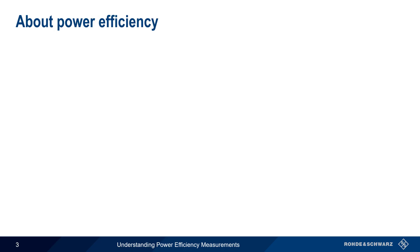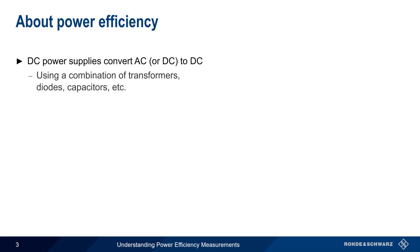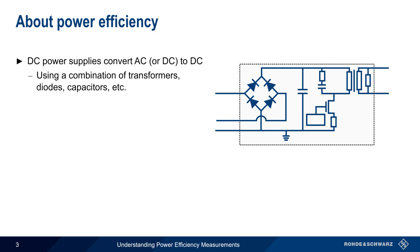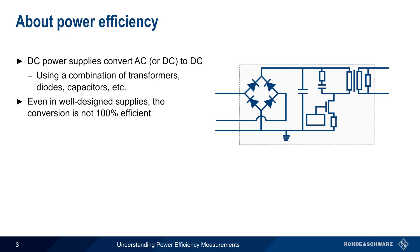Power supplies are used to convert AC to DC or to convert one DC voltage level to another. This is done using a combination of transformers, diodes, capacitors, and other components. Well-designed modern power supplies often have very high efficiencies – 90 to 95% or more is not uncommon. But even the best power supply is not 100% efficient, and some power is always lost during the conversion process.